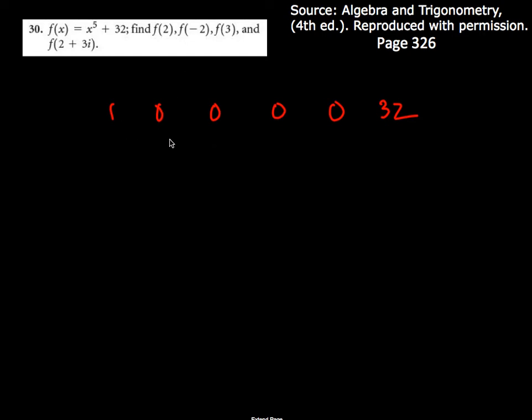Here's another question where you need to use synthetic division to find the remainder or to determine whether this is a zero or similar kind of question. So I've already set it up, making sure that I put zero in for x to the fourth, x cubed, x squared, and the x terms.